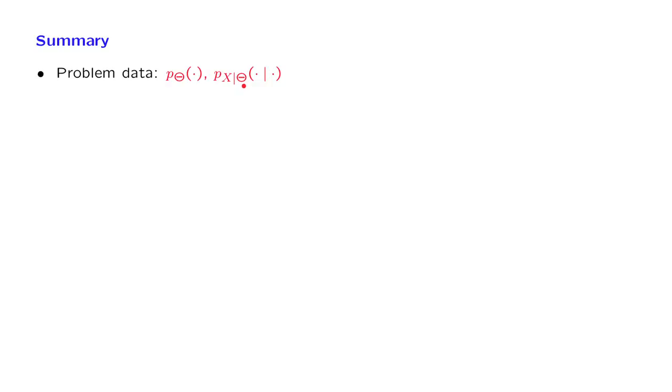The inference problem is as follows. We will be given the value of the random variable X, and then we want to find the posterior distribution of theta. That is, given this particular value of X, what is the conditional distribution of theta?